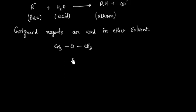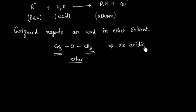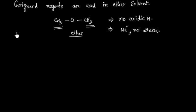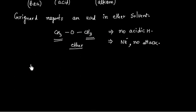Consider a typical ether: these hydrogens are not acidic, so ether has no acidic hydrogen. It also does not have any carbon with a positive charge. So the Grignard reagent in this case cannot act as a nucleophile — there is no nucleophilic attack on ether because it does not have a carbon with sufficient positive charge.